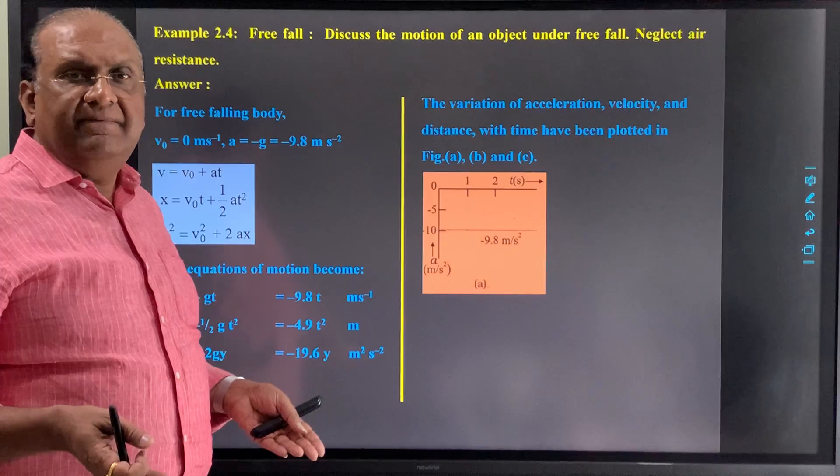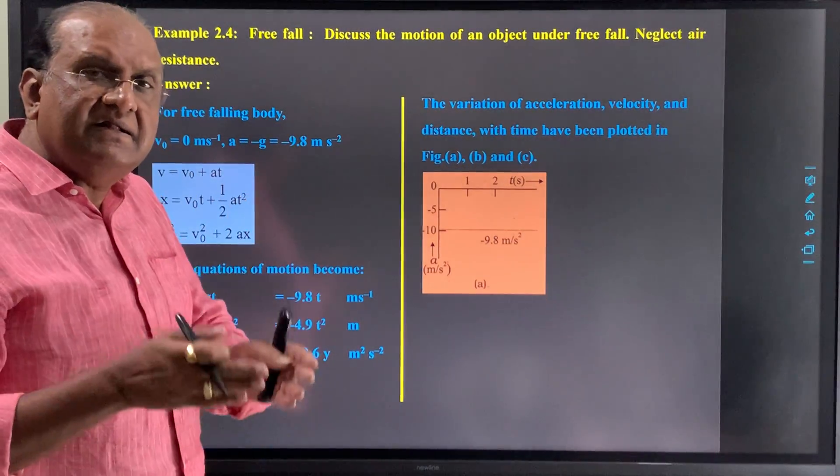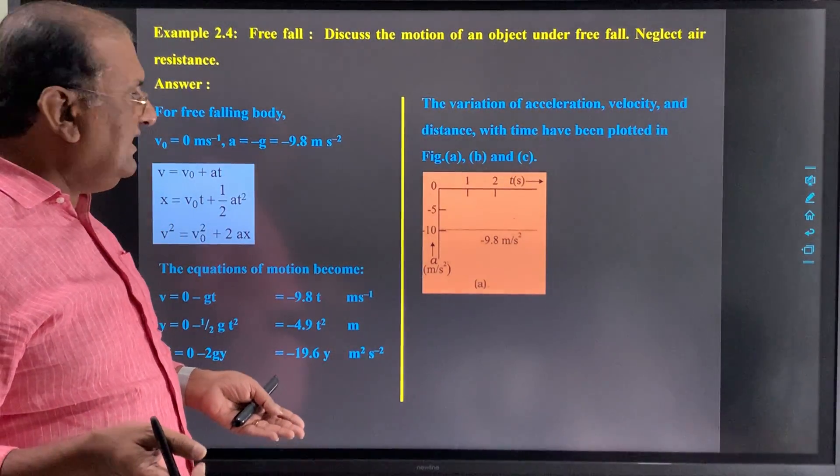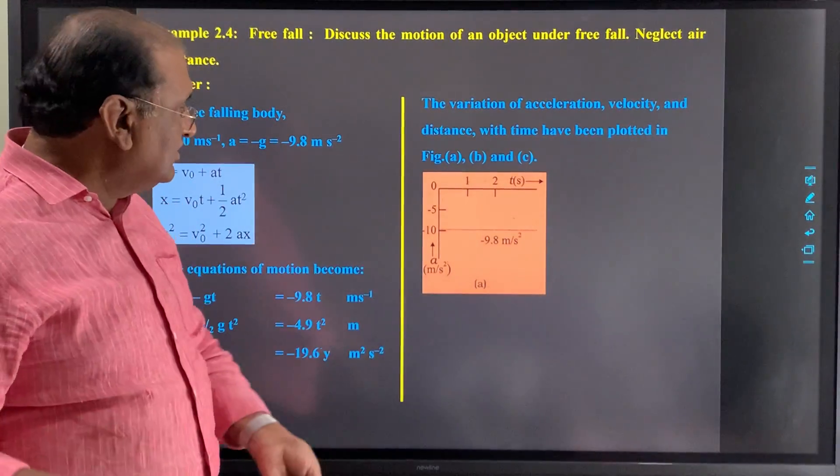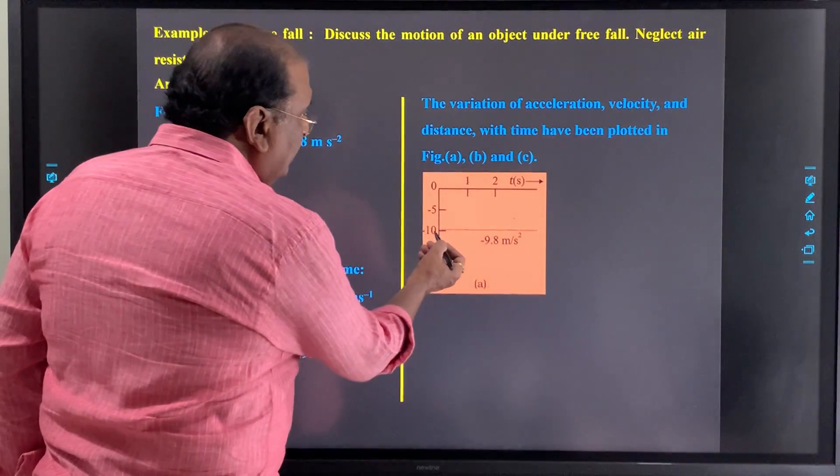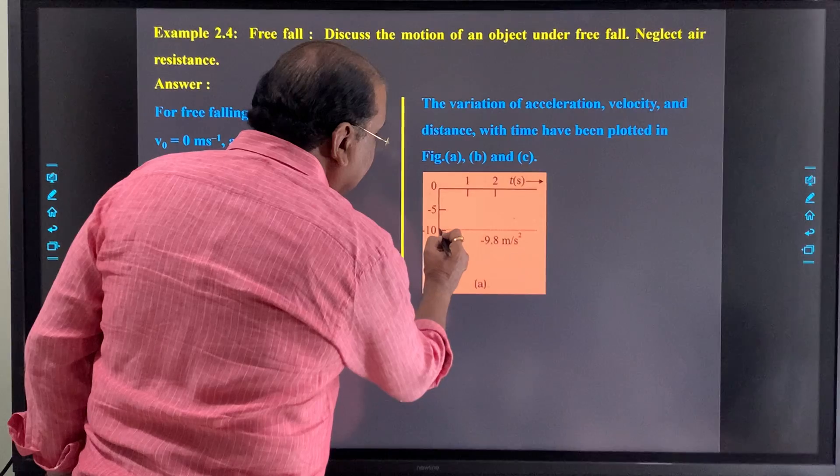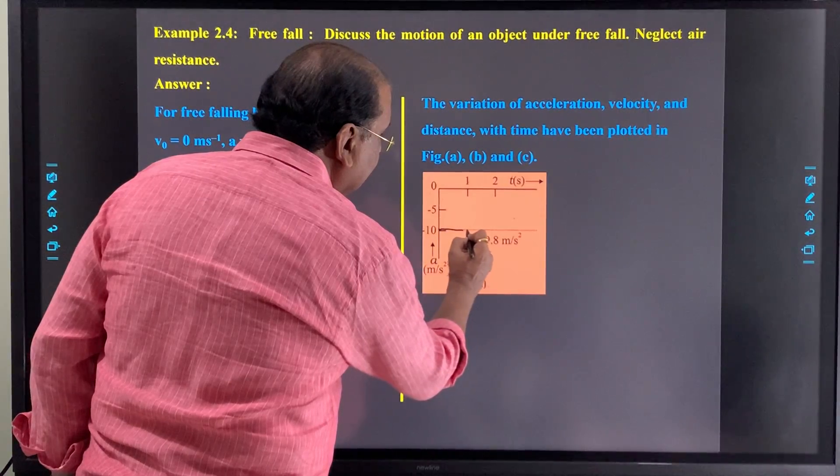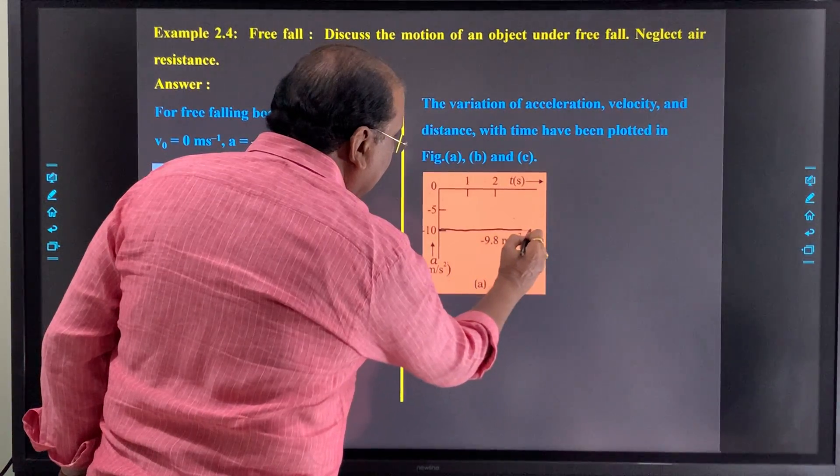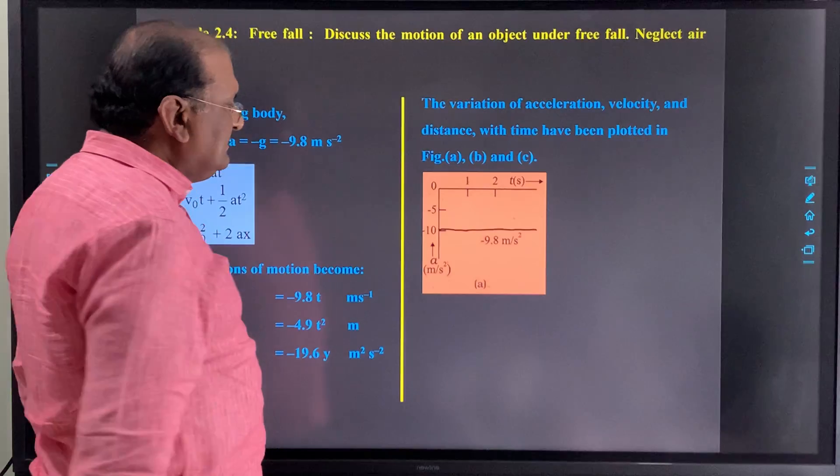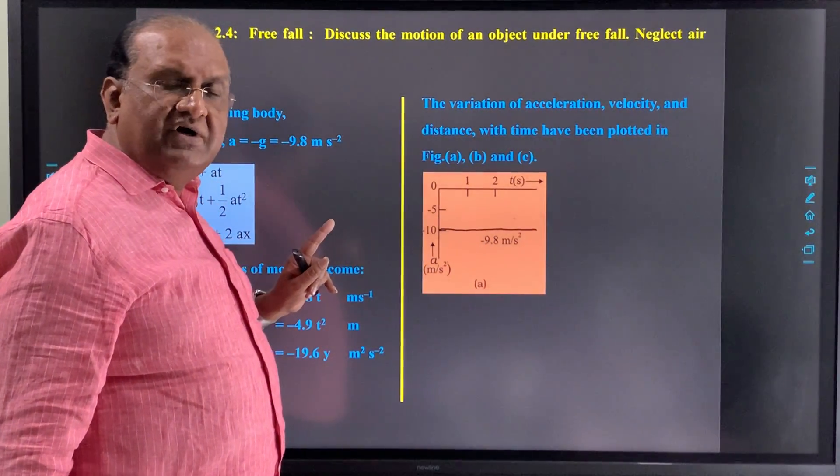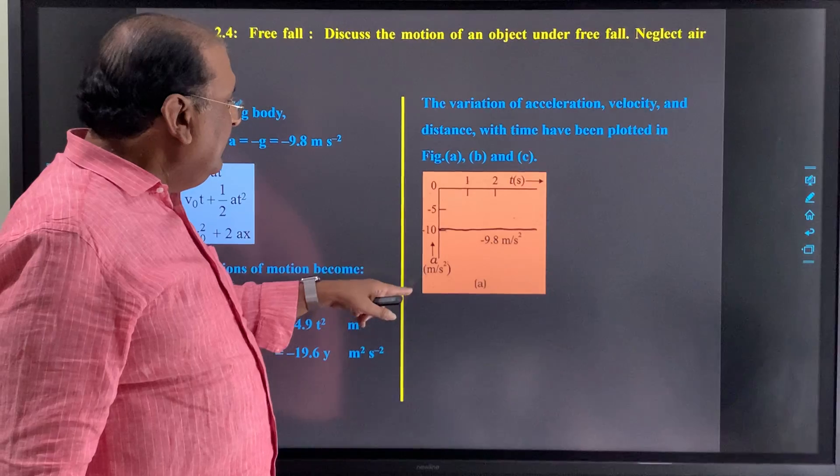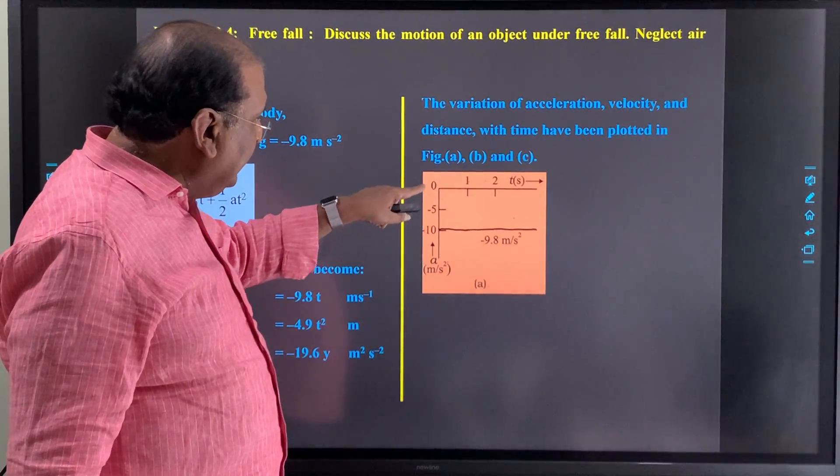So acceleration is gravitational acceleration, it is constant. So here we will get a straight line parallel to the time axis, because acceleration does not change and it is minus 9.8, so it is taken on negative y axis.